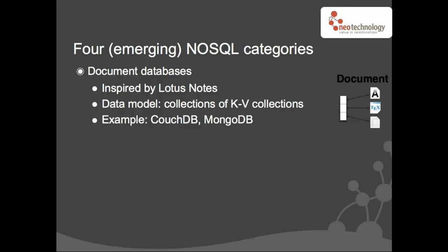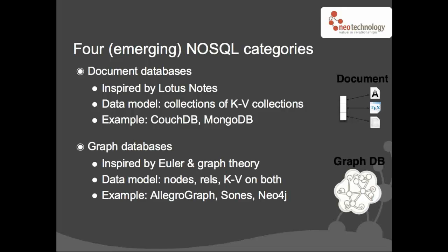The most popular document database today is MongoDB. Many of you have probably heard of it. It's basically the equivalent of CouchDB, but it's written in C++ and has client-side drivers and a bunch of other things that make it more convenient for many people to use. So that's the third category. And then the fourth category — my corner of the NoSQL world — is graph databases.